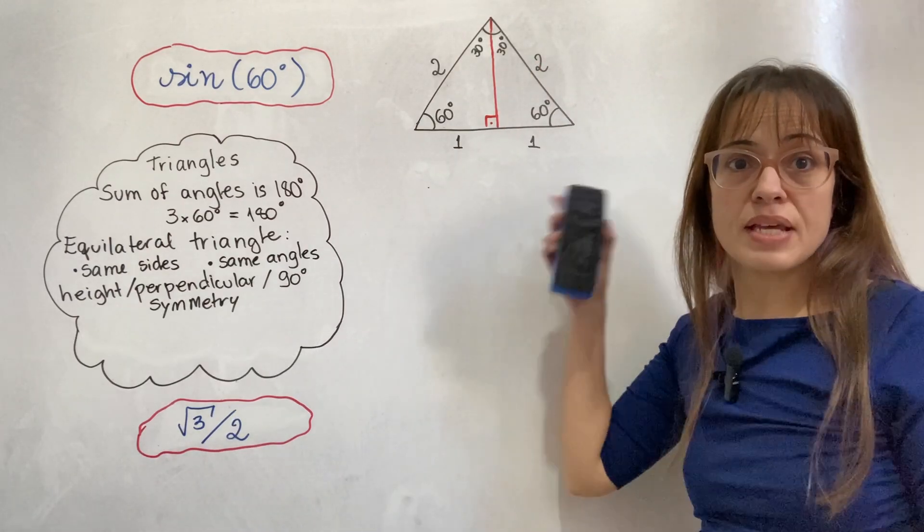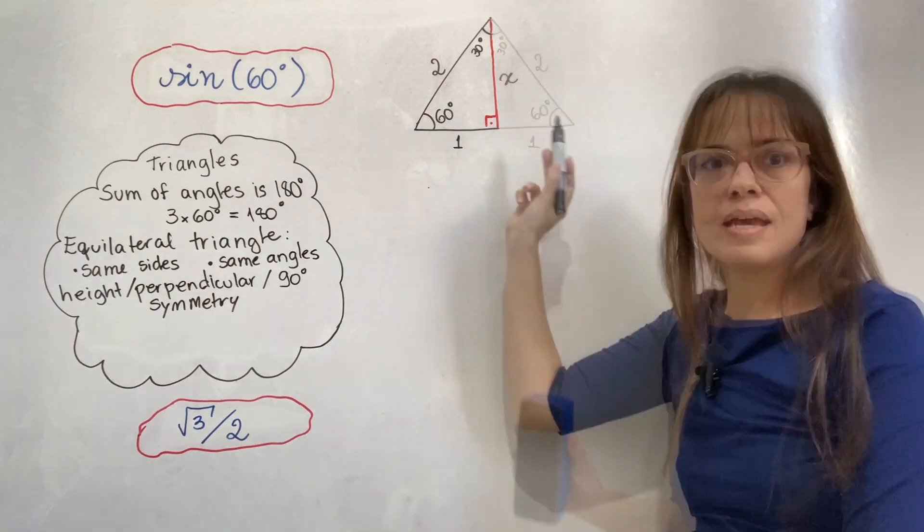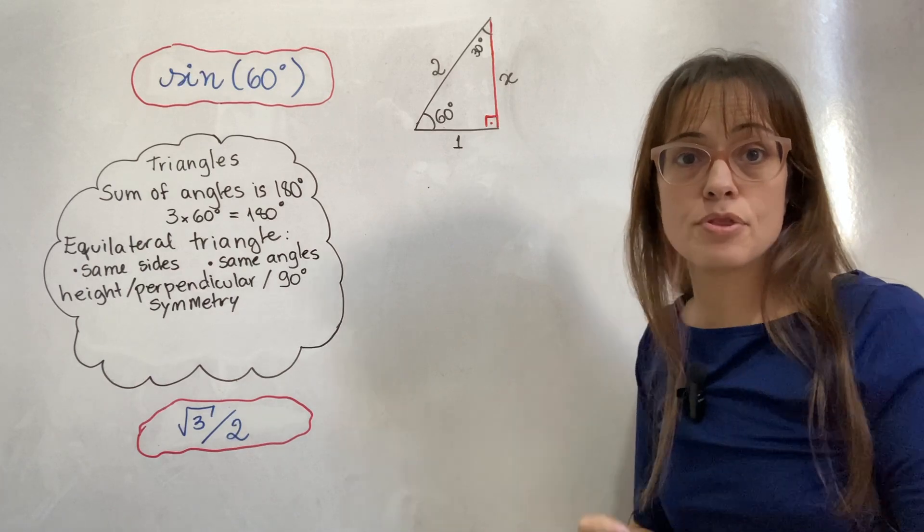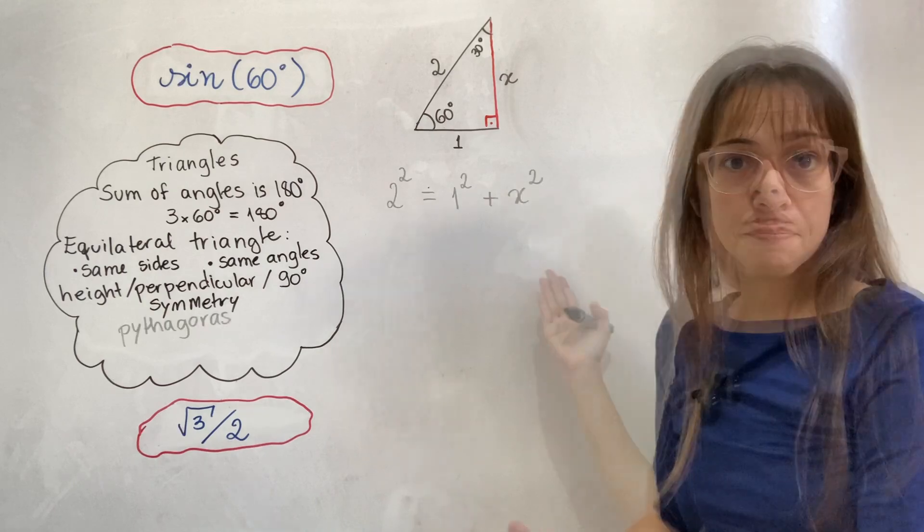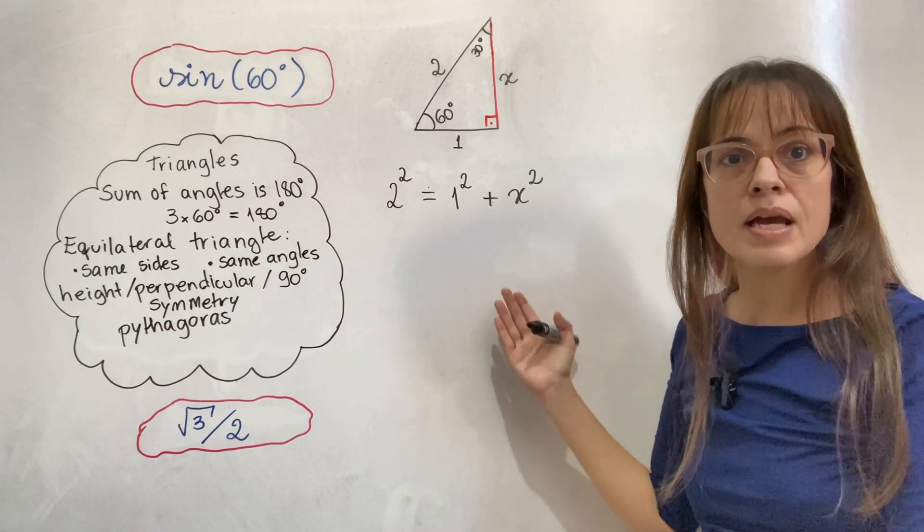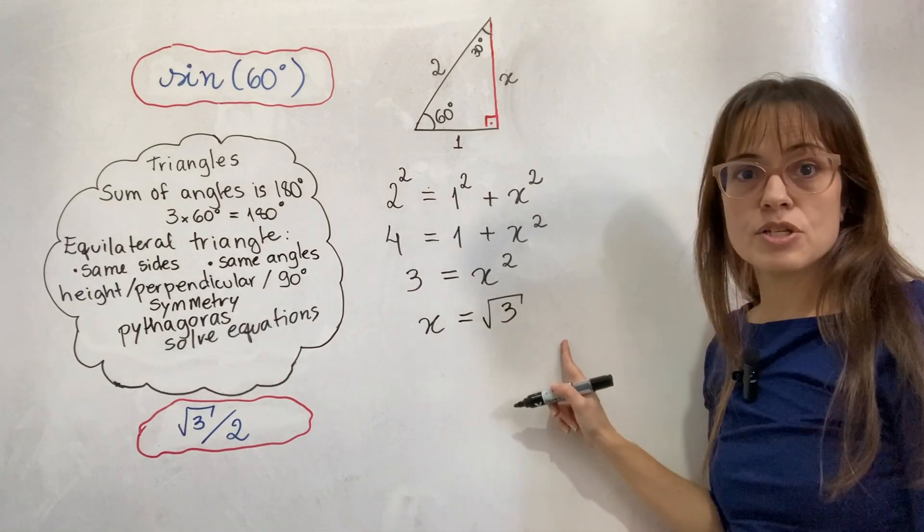I'm now going to erase half of this triangle because it's going to be enough to just look at one side. And I would like to figure out what is the length of the missing side. In order to do that, I'm going to use my old friend Pythagoras. This is what he is telling me. And it's a good thing that I know how to solve equations. Here's my answer.